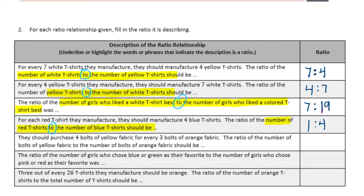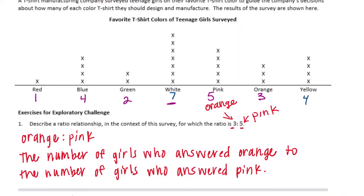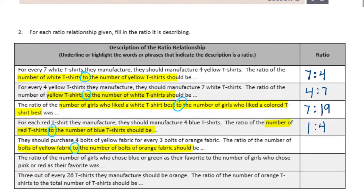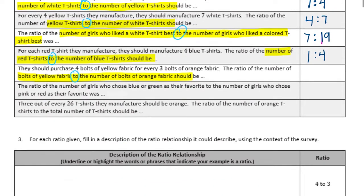They should purchase 4 bolts of yellow fabric for every 3 bolts of orange fabric. The ratio of the number of bolts of yellow fabric to the number of bolts of orange fabric. We're looking for yellow to orange: yellow is 4, orange is 3. We have 4 to 3.